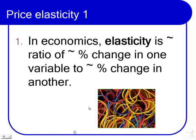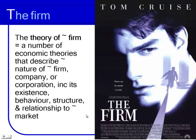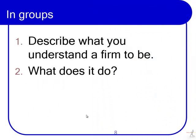So there are the two things. Price is elastic, as we can see from those two drawings. Now the firm. The theory of the firm equals a number of economic theories that describe the nature of a firm, or the company, or the corporation, including its existence, its behaviour, structure, and relationship in the market. In groups, describe what you understand a firm to be and what it does.